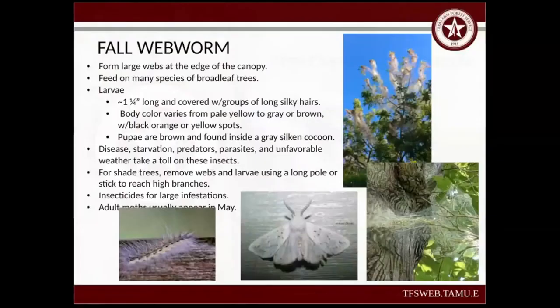The first thing we're going to talk about is the fall webworm. These form large webs in the canopy of the trees. The larvae are approximately one to one-and-a-quarter inches with groups of long, silky hairs. Body color can vary from yellow to brown, and it also has black or orange-yellow spots. These are brown and found inside a gray, silky cocoon. Disease, starvation, predators, parasites, and unfavorable weather take a toll on these insects.